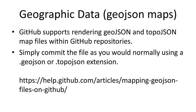Another big one is geographic data, using GeoJSON maps. GitHub supports rendering GeoJSON and TopoJSON map files within GitHub repositories. When people view these files in your repository, they'll actually be able to see the map rendered right there. All you have to do is commit the file as you normally would using a .geoJSON or .topoJSON extension. There's more detail at the provided URL.